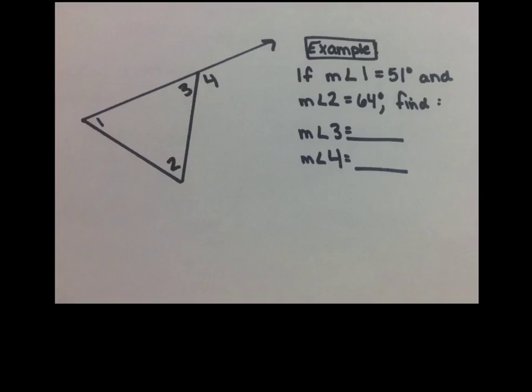Let's take a look at this example. We see the measure of angle 1 equals 51 degrees and the measure of angle 2 is 64 degrees. Now we're looking to find the measure of angle 3 and the measure of angle 4. I know that if I add angle 1 and angle 2 together, 51 plus 64, I'm going to get the measure of angle 4, because those are remote interior angles associated with that exterior angle. And I get 115 degrees. And then we can find the measure of angle 3 by taking 180 minus 115, and I get 65 degrees for the measure of angle 3.